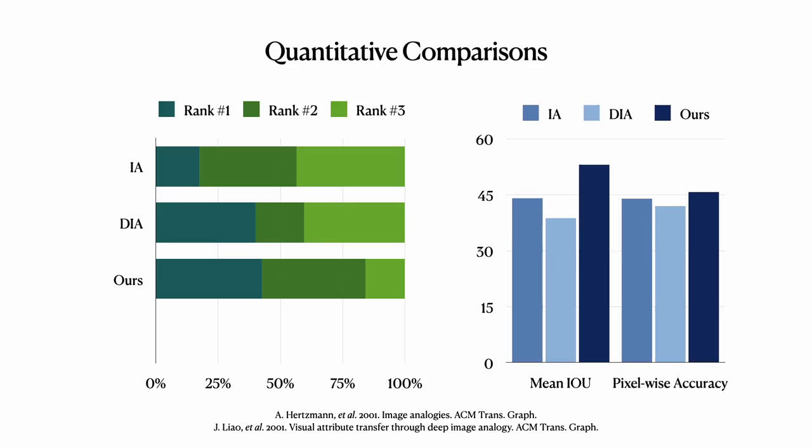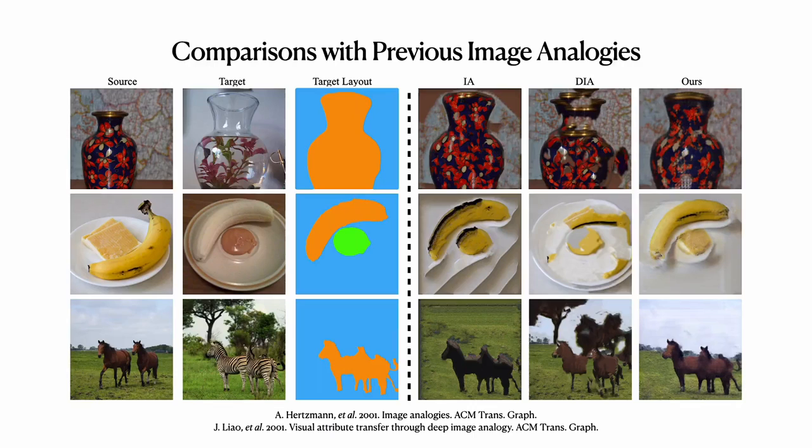The left chart shows the superiority of the proposed method against the two competitors. To evaluate semantic consistency of the generated images with the target segmentation map, we use a state-of-the-art segmentation model to predict the segmentation maps of generated images and calculate pixel-wise accuracy and mean intersection over union (mean IOU) with the target segmentation map. As shown in the right chart, the proposed method achieves the highest accuracy. As for visual quality, our method produces both natural and semantically aligned results, while DIA produces unrealistic results when the source image and the target image are not semantically similar, and IA tends to fill the changed instance with repeated textures.